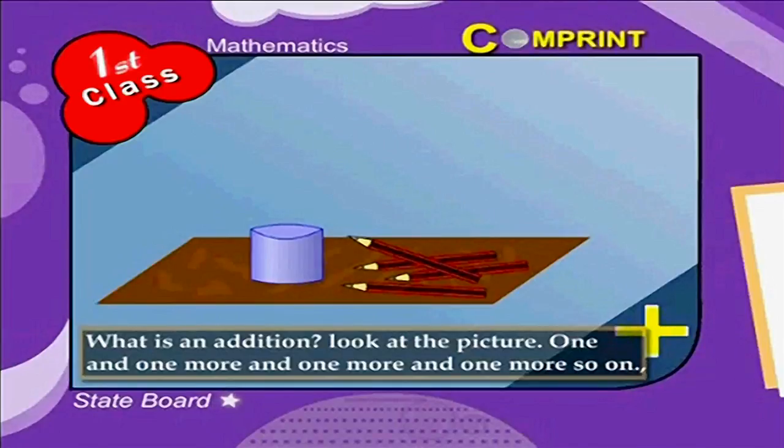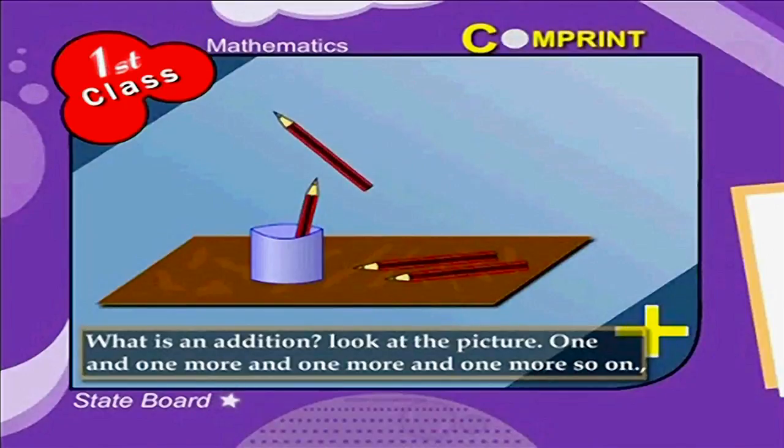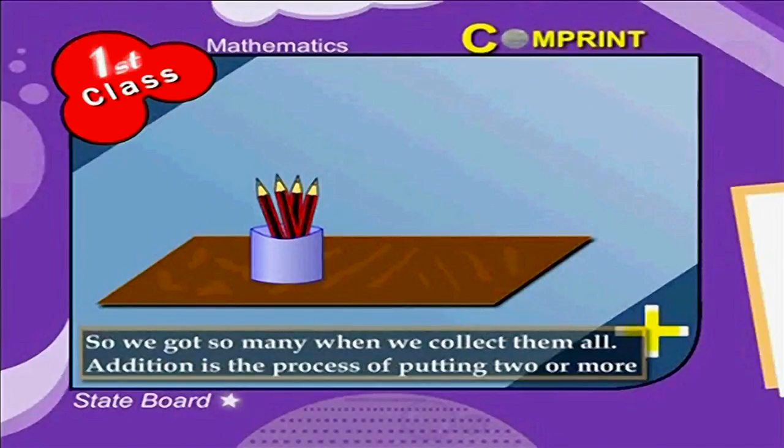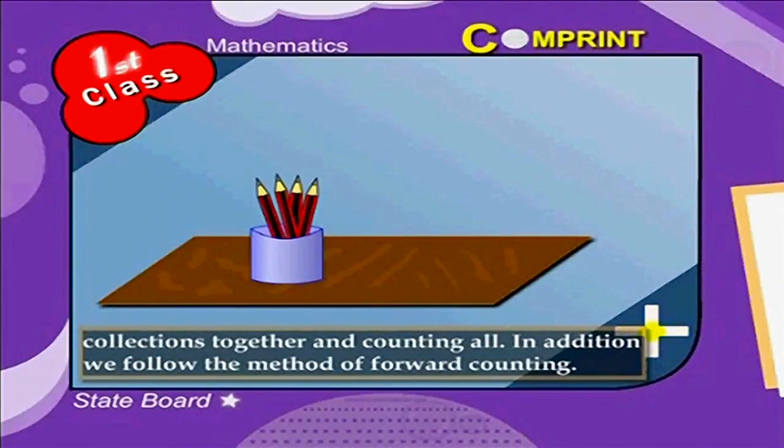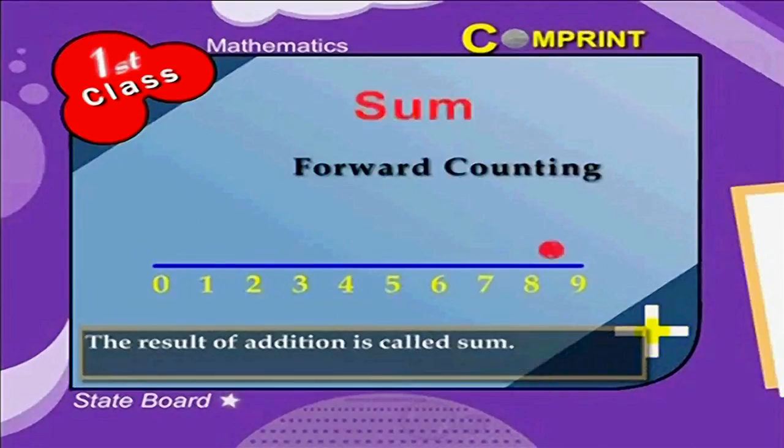What is an addition? Look at the picture. One and one more, and one more, and one more, and so on. We got so many when we collect them all. That is, addition is the process of putting two or more collections together and counting all. In addition, we follow the method of forward counting. The result of addition is called sum.